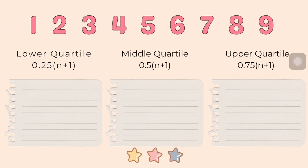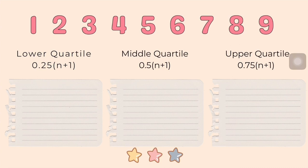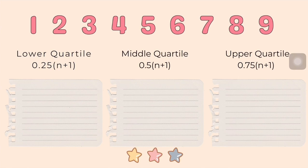Let's practice with the numbers 1, 2, 3, 4, 5, 6, 7, 8, and 9. First, we check that they are in numerical order — and they are. N equals 9, since there are 9 numbers.